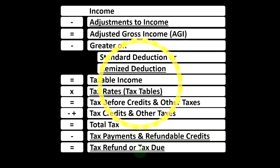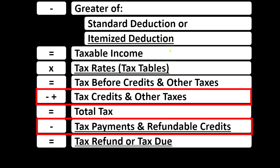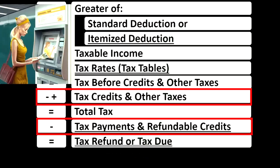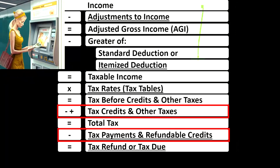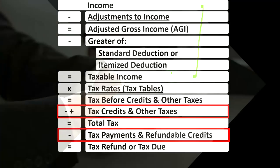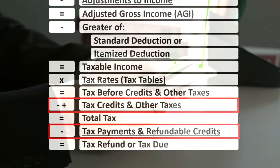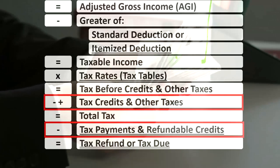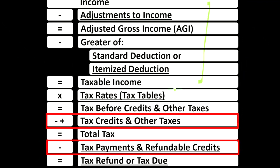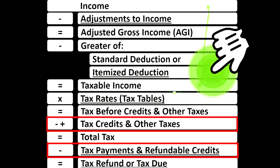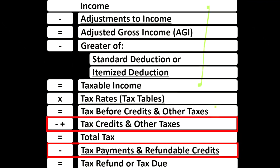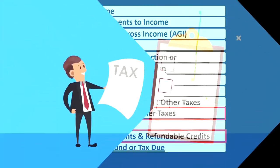Looking at the income tax formula, we're down at the bottom in the credit area. Remember, the first half of the income tax formula is, in essence, an income statement ending with the taxable income, which is similar to net income in a normal income statement. We then calculate the tax based on the taxable income — not with a flat tax, not with one rate — but with the progressive tax system to get to the tax before credits and other taxes.